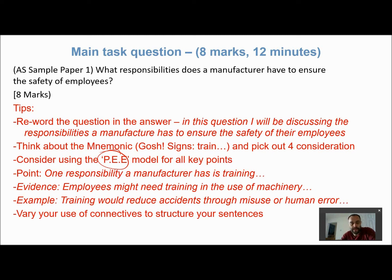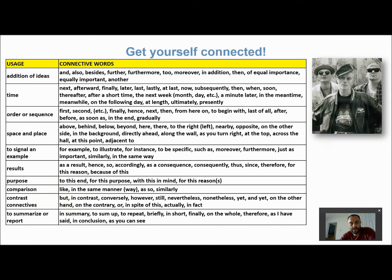Think about using the point-evidence-explanation model. Make your point — for example: 'One responsibility a manufacturer has is training of its employees.' Give evidence: 'Employees might need training in the use of machinery, tools, health and safety, or first aid.' Then give a justification: 'Training would reduce accidents through misuse or human error during laser cutting or welding.' Also try to vary your connectives — there's a page of them on this PowerPoint — so you're not just repeating 'and the next point is' each time.